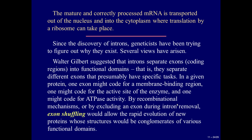The mature and correctly processed mRNA is transported out of the nucleus and into the cytoplasm where translation by a ribosome can take place. Since the discovery of introns, geneticists have been trying to figure out why they exist. Walter Gilbert suggested that introns separate exons into functional domains — separating different exons that have specific tasks. In a given protein, one exon might code for a membrane-binding region, one for the active site of an enzyme, and one for ATPase activity. By recombination mechanisms or by excluding an exon during splicing, exon shuffling would allow the rapid evolution of new proteins whose structures would be conglomerates of various functional domains.